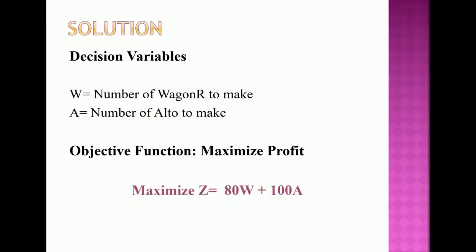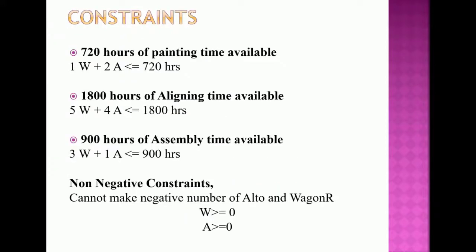Putting the final solution together: Decision variables are W and A. Objective function: Maximize Z = 80W + 100A. Subject to the constraints listed. This is the complete model — presented clearly on one page. I hope you understand how to formulate a linear programming problem.